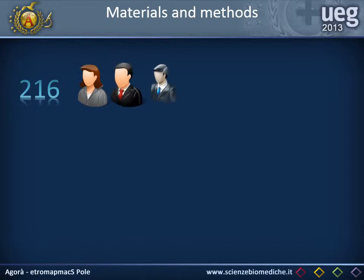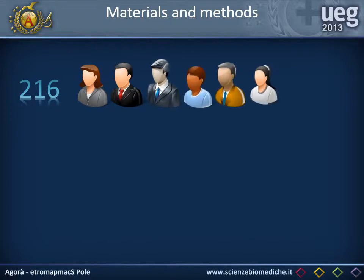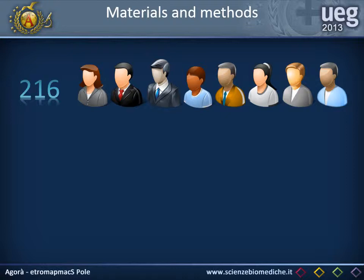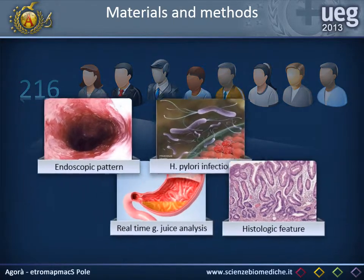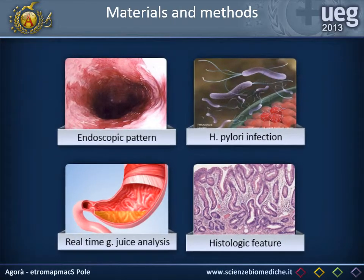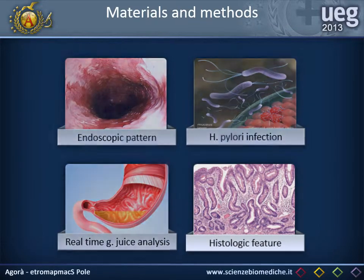This is a retrospective analysis of a prospective cohort of 216 patients referred for diagnostic upper endoscopy. These patients were not taking anti-secretory drugs in the two weeks before the examination. The parameters evaluated were endoscopic pattern, H. pylori infection, real-time gastric juice analysis, and histologic features.